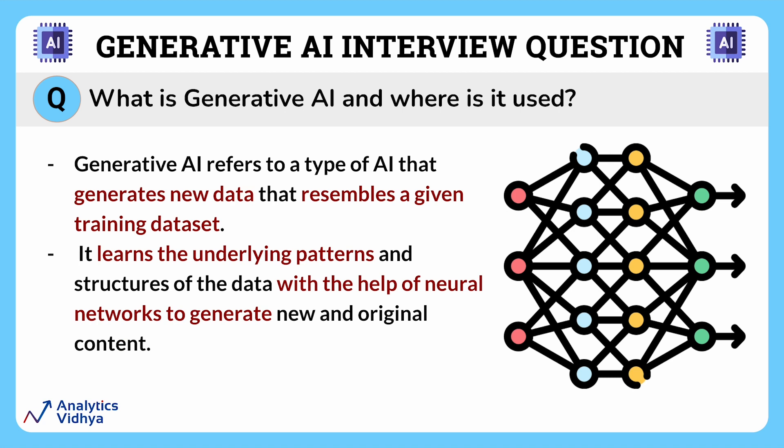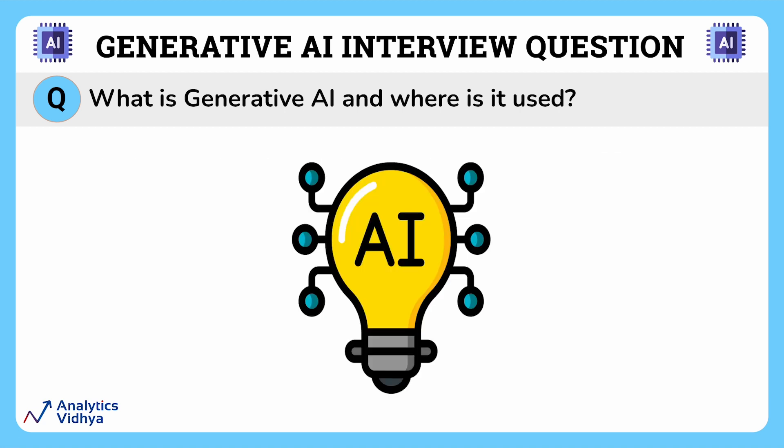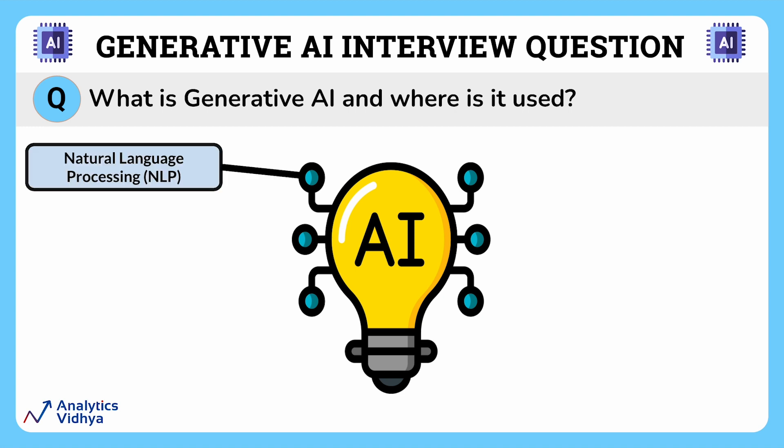Now let's see what generative AI can do. It can perform a wide range of tasks, but here we'll look at the most popular applications. First is natural language processing, or NLP, where AI is used for various language-oriented functions such as text generation, language translation, and building chatbots that can engage in human-like conversations.